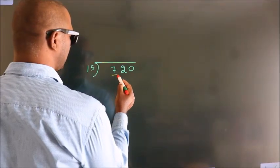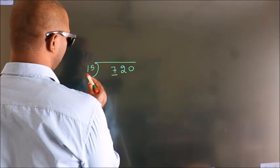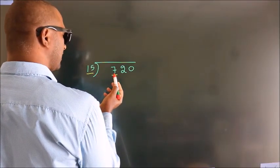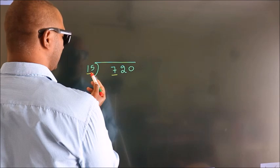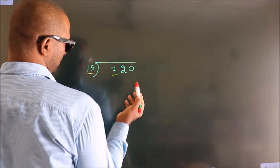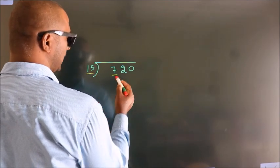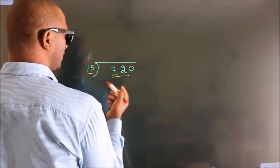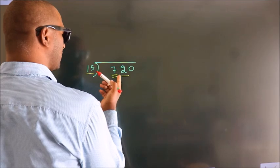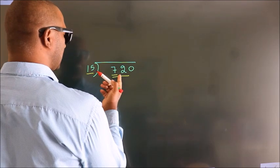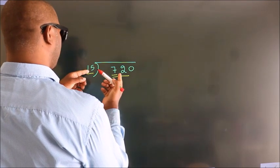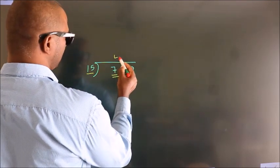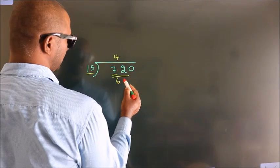Here we have 7, here 15. 7 is smaller than 15, so we should take two numbers: 72. A number close to 72 in the 15 table is 15 fours, 60.